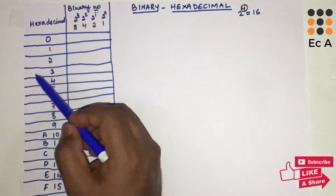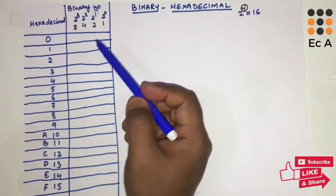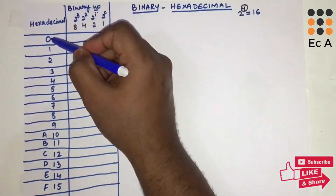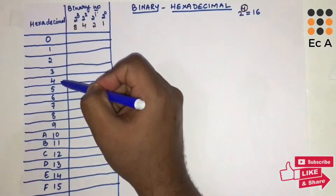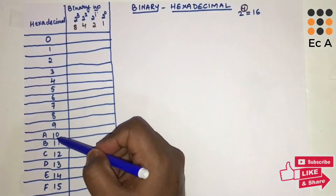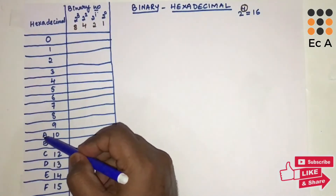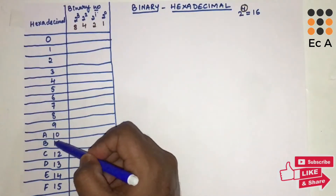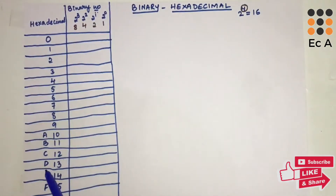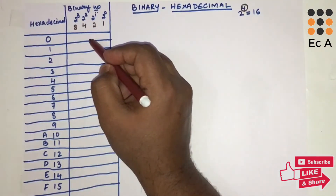Let us list the hexadecimal digits and their 4-bit binary equivalents. The hexadecimal digits are 0 through 9, then A, B, C, D, E, and F. A equals 10, B equals 11, C equals 12, D equals 13, E equals 14, and F equals 15. Now we need to write the equivalent 4-bit binary number for each.